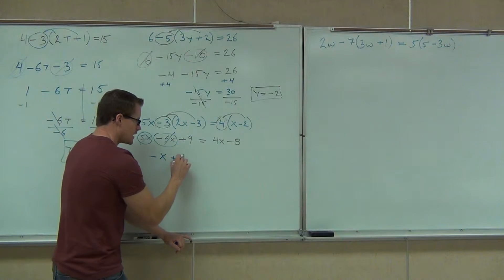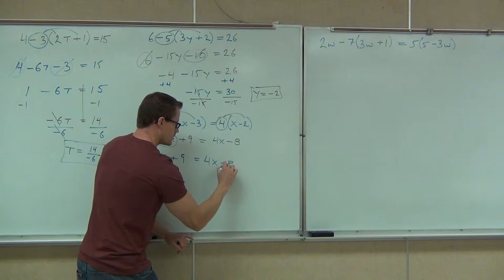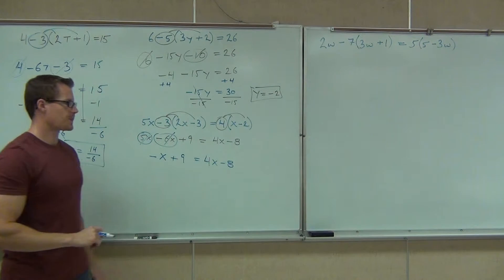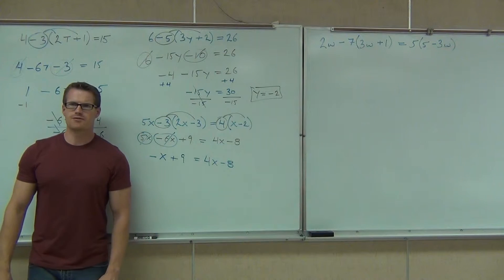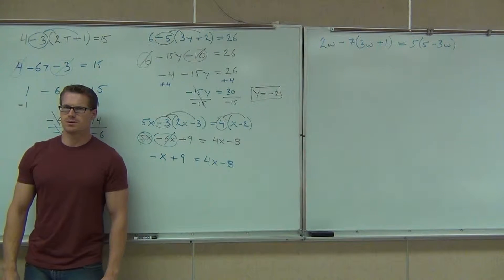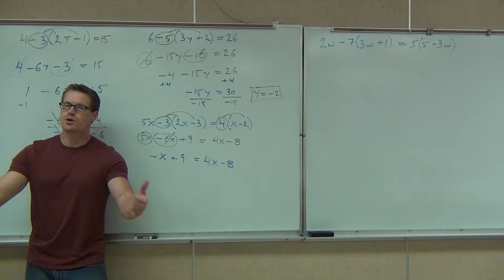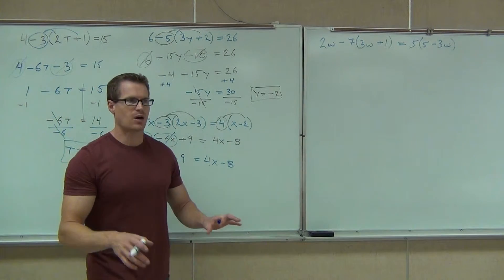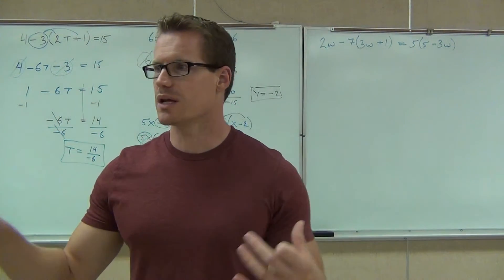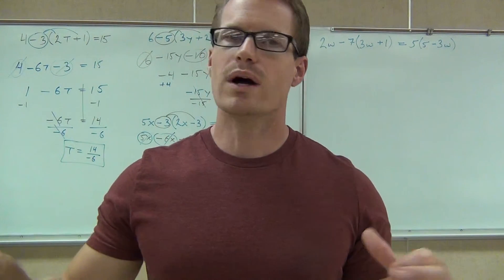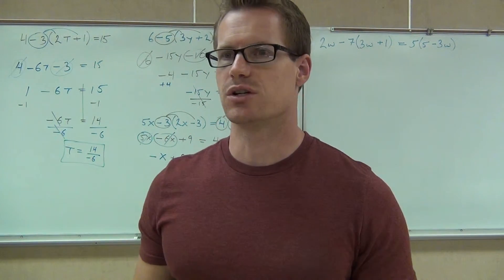And then we have the plus 9 equals 4x minus 8. Now don't get stuck — we don't have any like terms, but we do have variables on either side of the equation. What do I do if I have variables on either side of my equation?